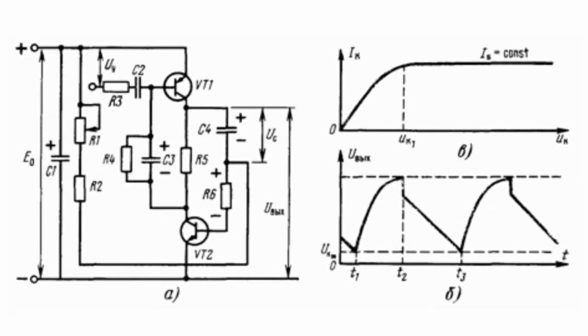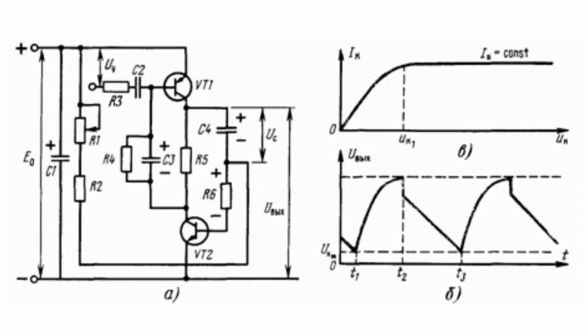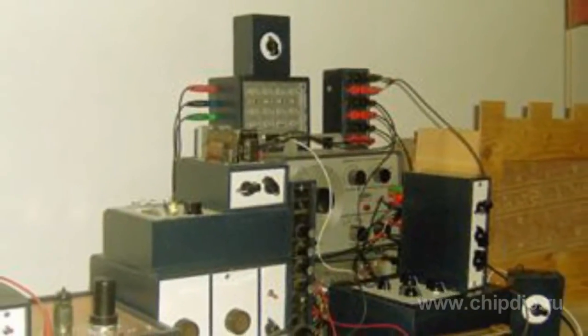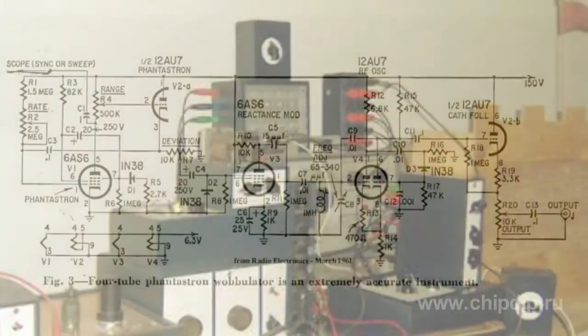The duration of the working stage of the Phantastron, that is the duration of the generated pulse, depending on the parameters of the scheme, lies within the range of several microseconds to several tens of seconds. It can be adjusted smoothly by a potentiometer and stepwise by a capacitor.